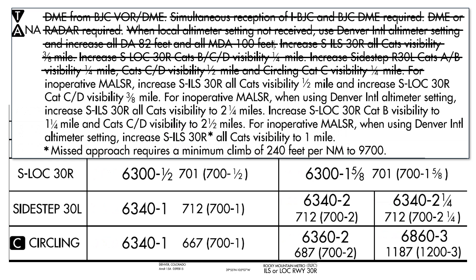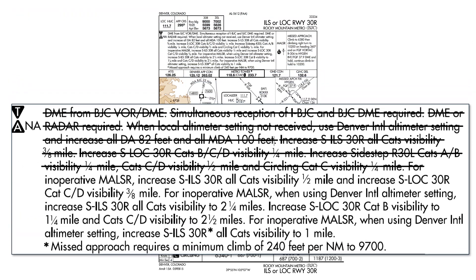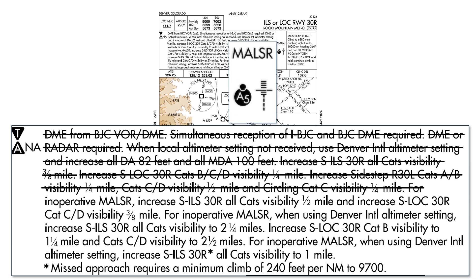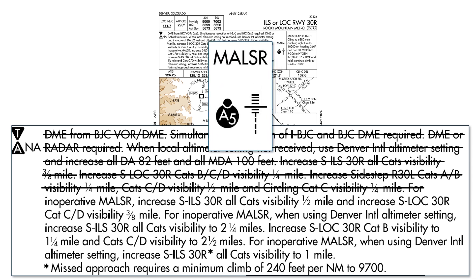After that, we're going to look at what happens when the MALSR medium-intensity approach lighting system is inop. The MALSR looks like this — it has running approach lights leading up to the runway and then runway-end identifiers. They allow a visual to be made from further out, so they allow visibility minimums to come down. Without the lights, the minimums must increase. The next few lines of notes say what those raised minimums are, including what the minimums should be when both the MALSR is out and the Denver altimeter is being used.